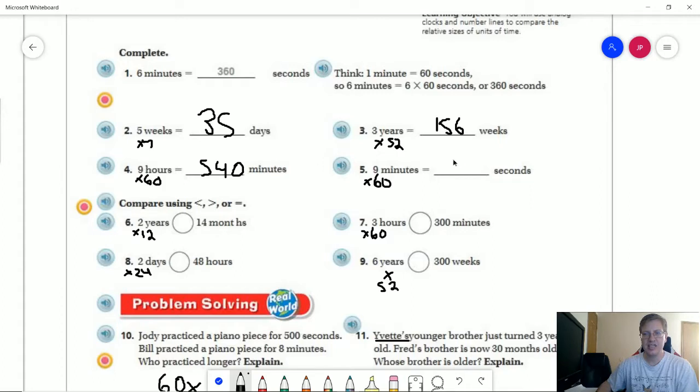We are going to get the same answer for number five, but this time we are going from minutes to seconds. So 60 seconds in a minute, 60 minutes in an hour. For number six, we can compare by multiplying two years times 12 months in a year. That's going to give us 24 compared to 14. So we would use the inequality symbol for greater.